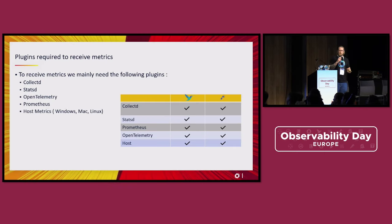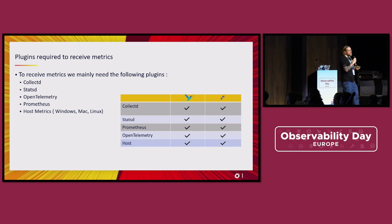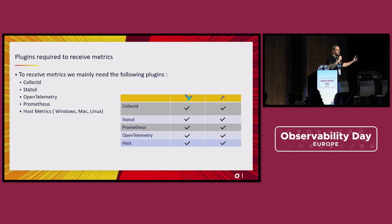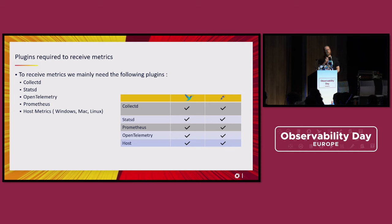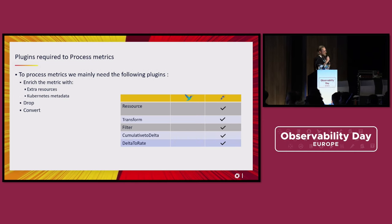Now let's go over metrics. For metrics, you want to collect with the most common protocols: collectd, statsd, Prometheus — having the ability to collect from Prometheus endpoints — and also collect host-level metrics. Both agents have the plugins for this. I would say the only disadvantage with FluentBit is that there's no support for scrape config — no way of doing relabeling or metric relabeling — which from my perspective was a big disadvantage on the FluentBit side.